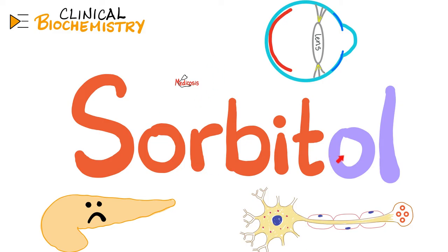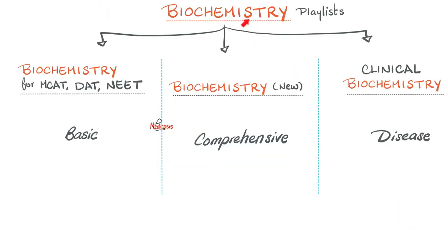Today we'll talk about a very important topic in diabetes, which is sorbitol accumulation — why sorbitol causes damage to the retina, to nerve fibers, and to the lens of the eye. I have three biochemistry playlists on this channel: the first one is about the basics, then we have a very comprehensive one, and this one is just clinical.